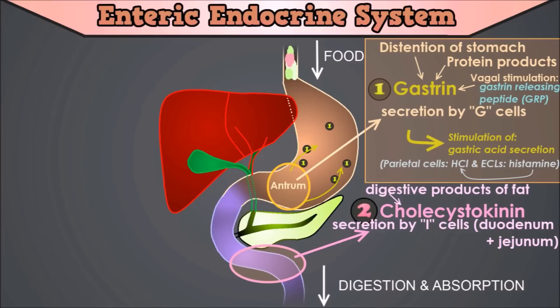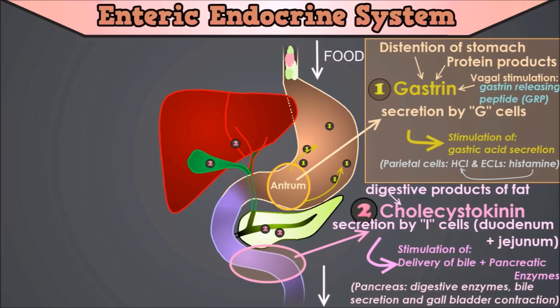CCK mediates digestion in the small intestine via various functions. It stimulates the acinar cells of the pancreas to release digestive enzymes and stimulates the secretion of a juice rich in pancreatic digestive enzymes. Together these enzymes catalyze the digestion of fat, protein, and carbohydrates. CCK also causes the increased production of hepatic bile and stimulates the contraction of the gallbladder and the relaxation of the sphincter of Oddi, resulting in the delivery of bile into the duodenal part of the small intestine, where bile plays important roles in emulsifying fatty substances, allowing them to be digested and absorbed. Cholecystokinin also inhibits stomach contraction moderately, slowing the emptying of food from the stomach to give adequate time for digestion of fats in the upper intestinal tract.